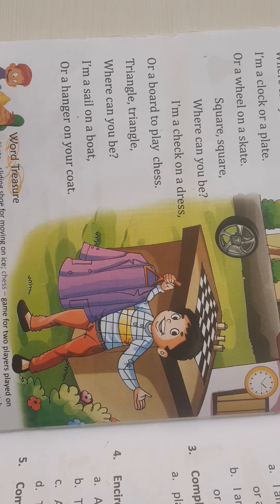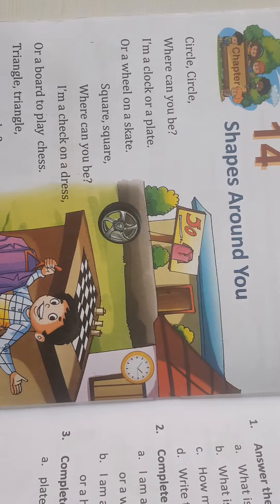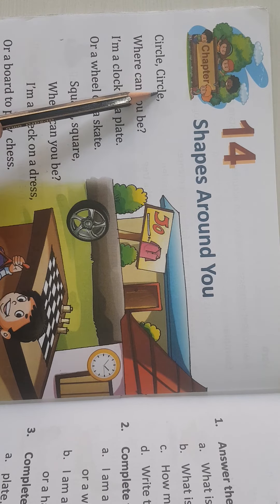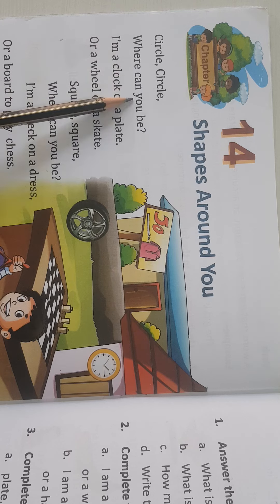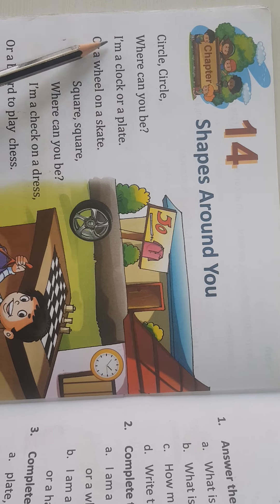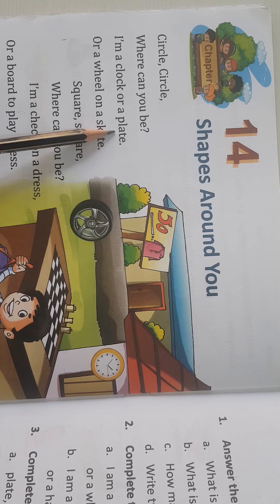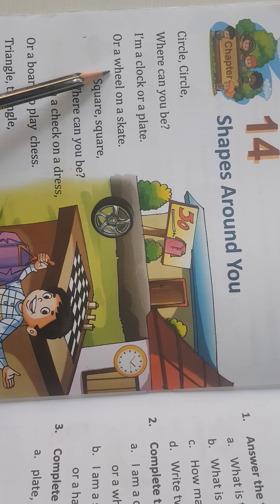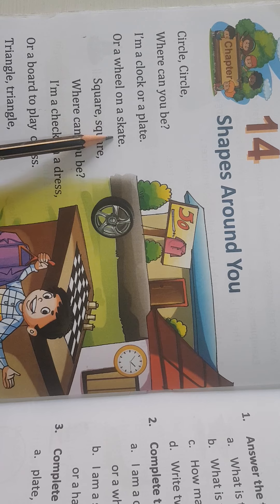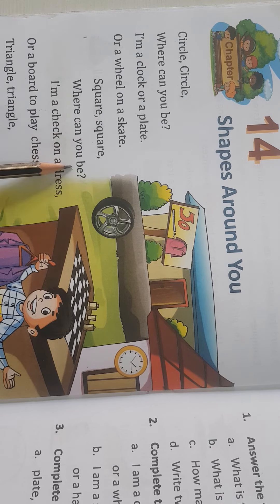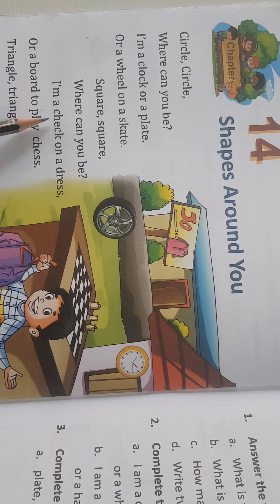Let's start again. Circle, circle. Where can you be? I am a clock or a plate or a wheel on a skate. Square, square. Where can you be? I am a check on a dress.